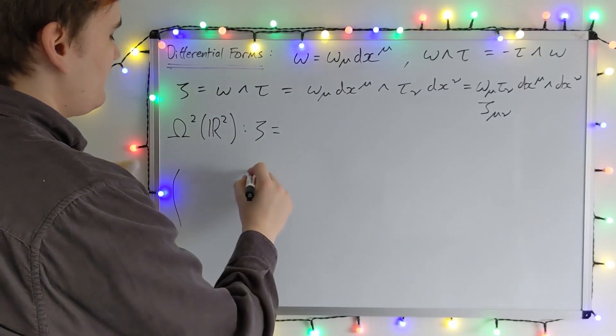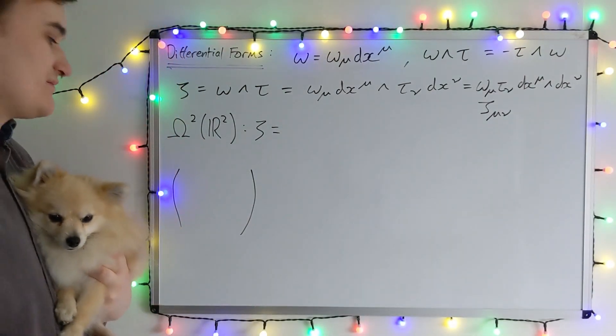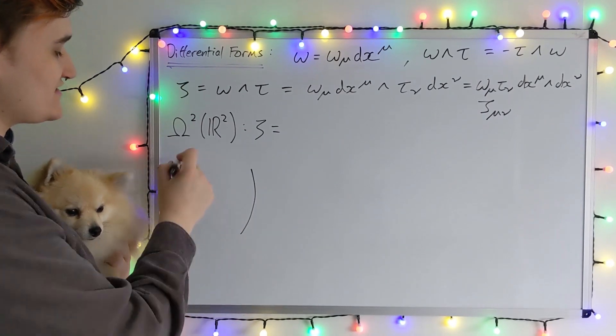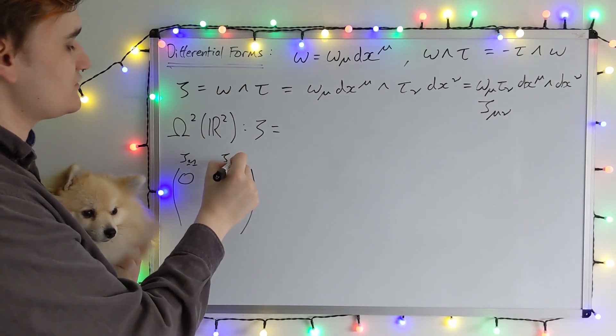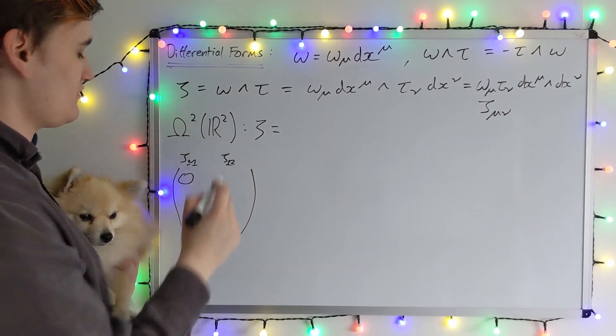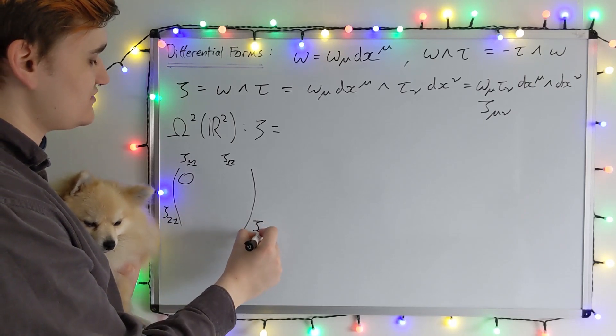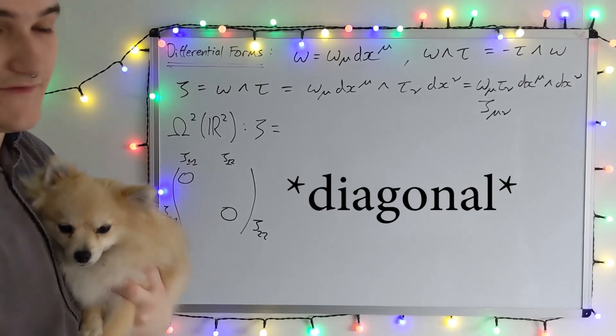So if we were now trying to think about our components of this zeta mu nu, say in terms of a matrix or just an array of numbers, the zeta 1 1, remember this is zeta 1 1, zeta 2 1, sorry, zeta 2 1, zeta 2 2, these are just the components. The diagonals are going to vanish.